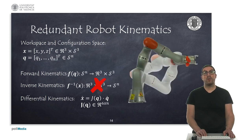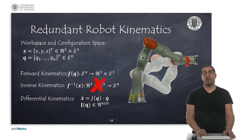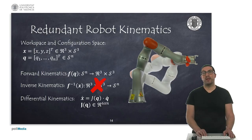Redundant robots are robots with seven or more degrees of freedom. In the case of serial manipulator robots, we can easily obtain a direct kinematic model using analytical methods such as the Denavit-Hartenberg method. However, we cannot obtain an inverse kinematic model in closed form, since there are infinite solutions. Usually, numerical methods are used in order to solve this inverse kinematic problem, and these methods are usually based on the pseudo-inverse of the Jacobian.